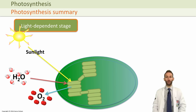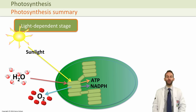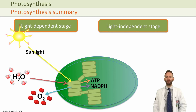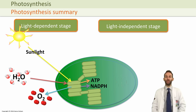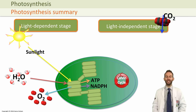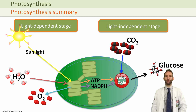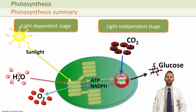Splitting water also provides hydrogen ions used to make ATP and NADPH. These then pass through to the light-independent stage, which does not require light. The ATP and NADPH are used in something called the Calvin cycle, which takes in carbon dioxide from the atmosphere.